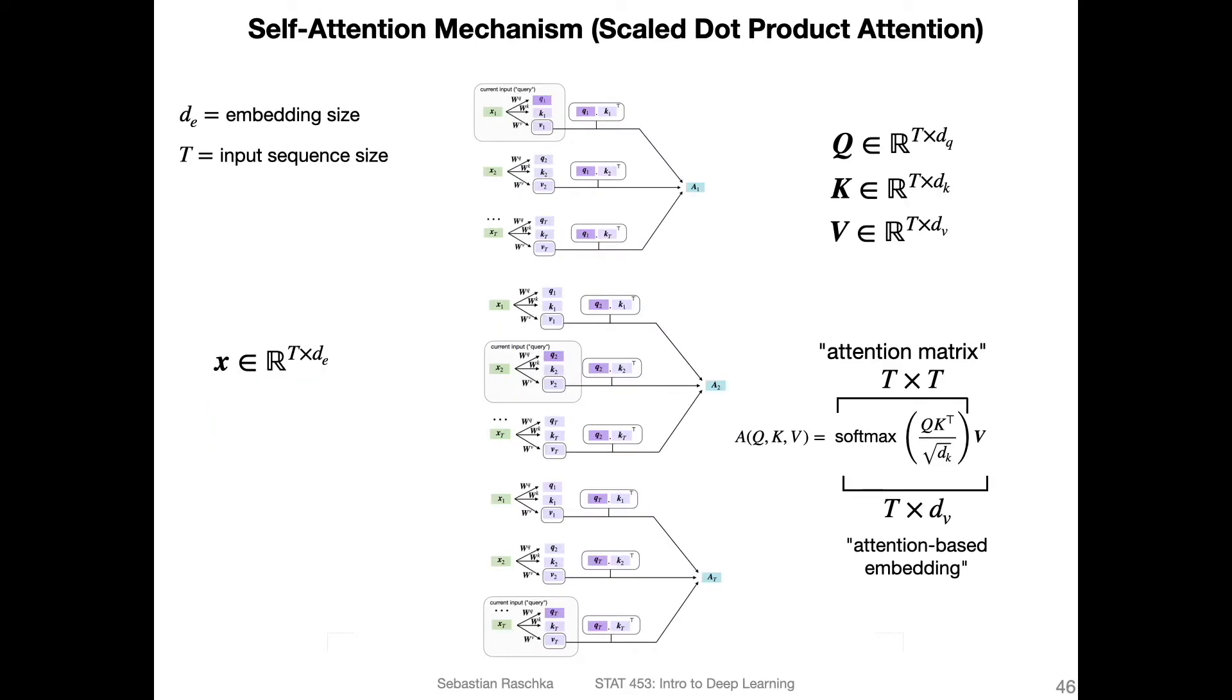In the previous video, I showed you this, where we computed this attention matrix. And we can think of this as one attention head. And surprise, surprise, multi-head attention is this thing here, just multiple times using different weight matrices.